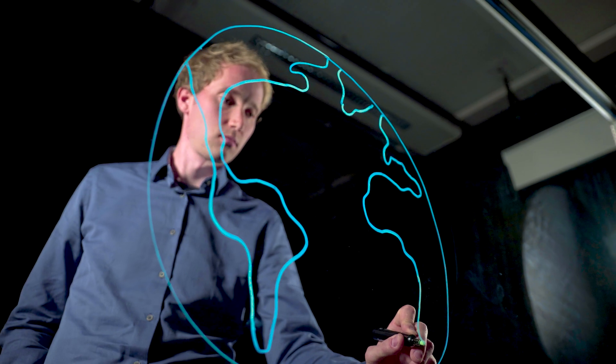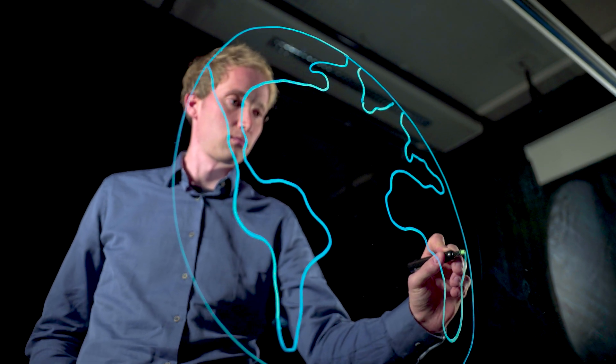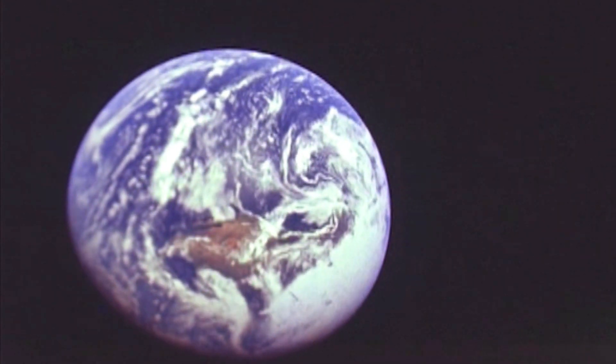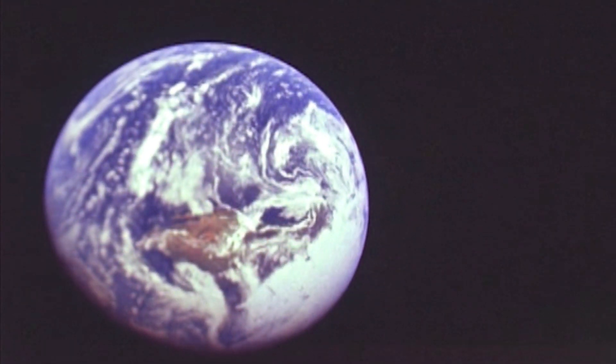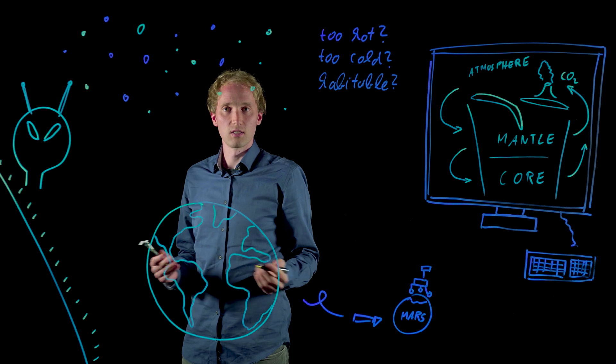Well, we only have one example where it worked out pretty well. It is our own planet Earth, with just the right distance from the sun and just the right amount of greenhouse gases in the atmosphere.